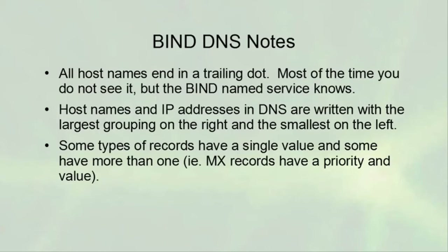Host names and IP addresses in DNS are written with the largest grouping on the right and the smallest on the left. For example.com, 'com' is the larger grouping on the right, and 'example' is on the left. For IP addresses like 10.11.12.13, the '10' is the largest grouping but DNS wants it on the right. So in DNS format, that would be written as 13.12.11.10.in-addr.arpa.